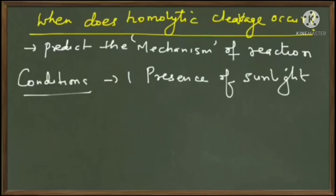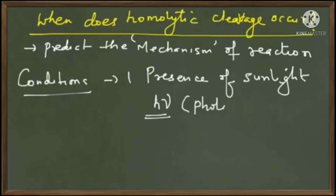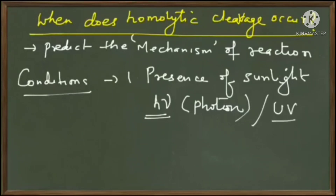There are many ways to write sunlight in a reaction: you can write hν, which shows the energy of a photon — a photon is the particle of light rays — or it can also be written as UV (ultraviolet rays). Whenever you see any of these, you should assume that the reaction goes by homolytic cleavage.